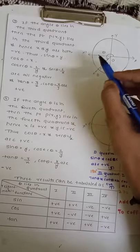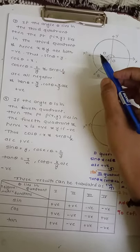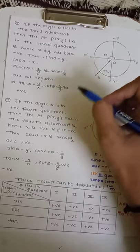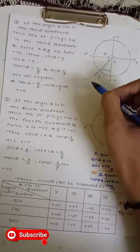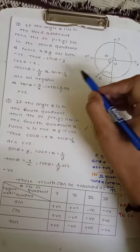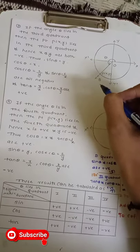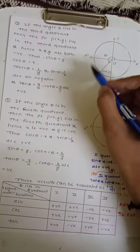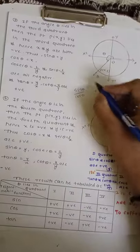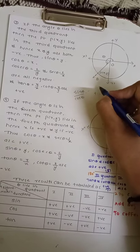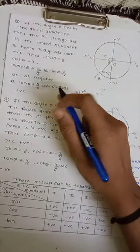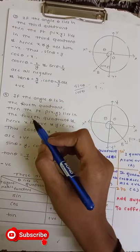Since sin θ = y and cos θ = x, and both x and y are negative, sin θ and cos θ in the third quadrant are negative. Therefore cosec θ = 1/sin θ is negative, and sec θ = 1/cos θ is negative. For tan θ = sin θ / cos θ, negative divided by negative is positive. And cot θ = cos θ / sin θ is also negative over negative, which is positive. So tan θ and cot θ in the third quadrant are positive.